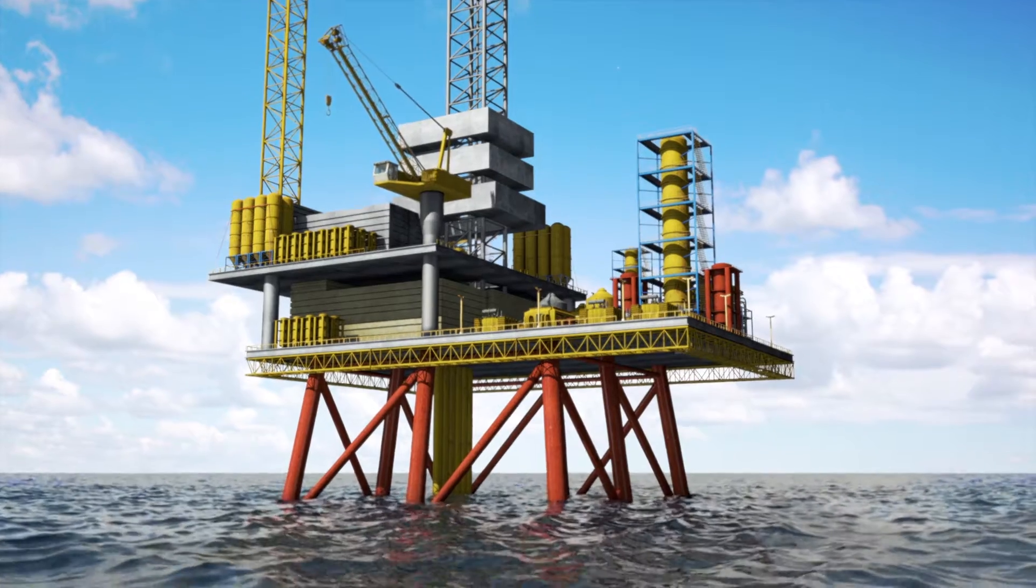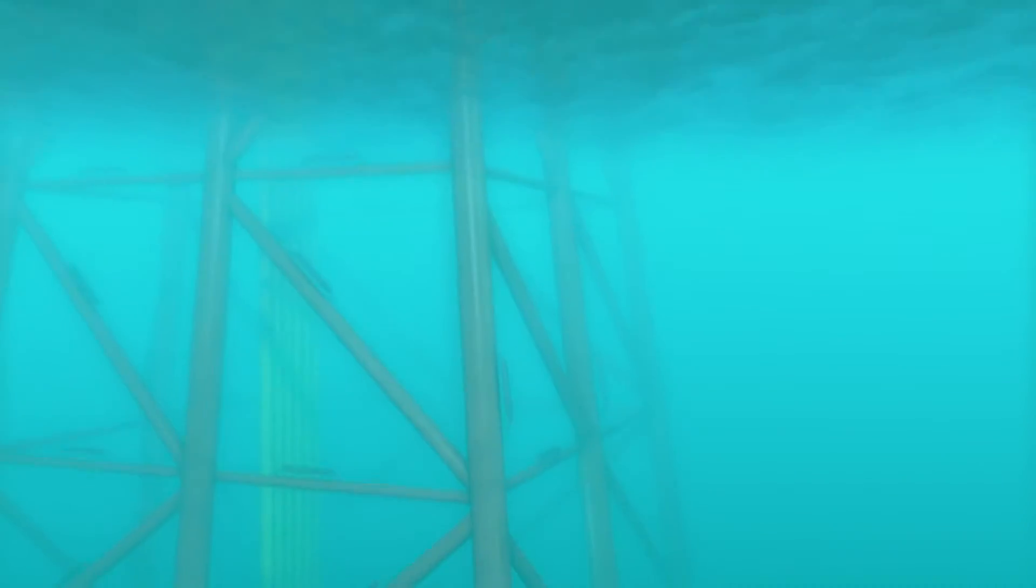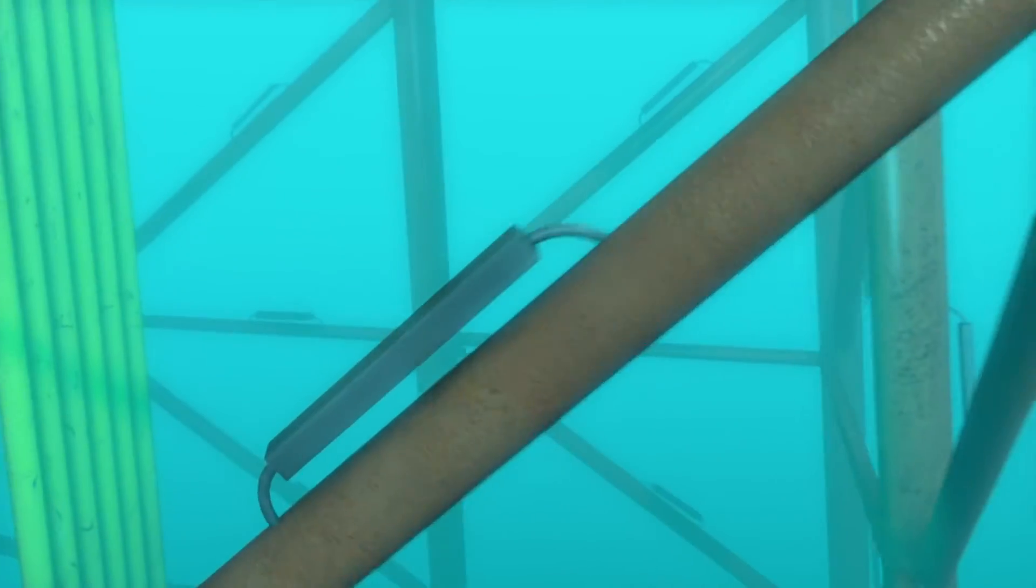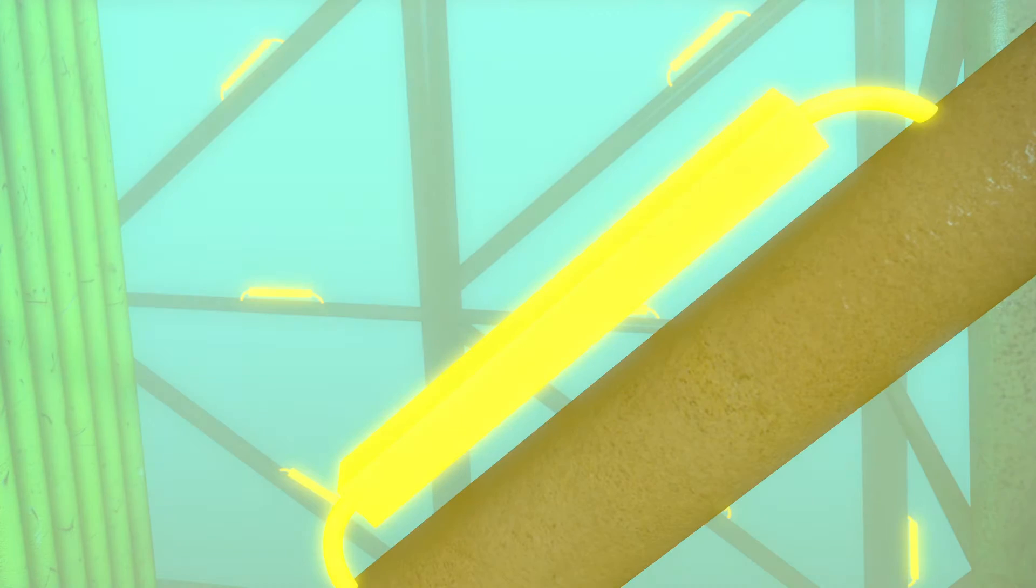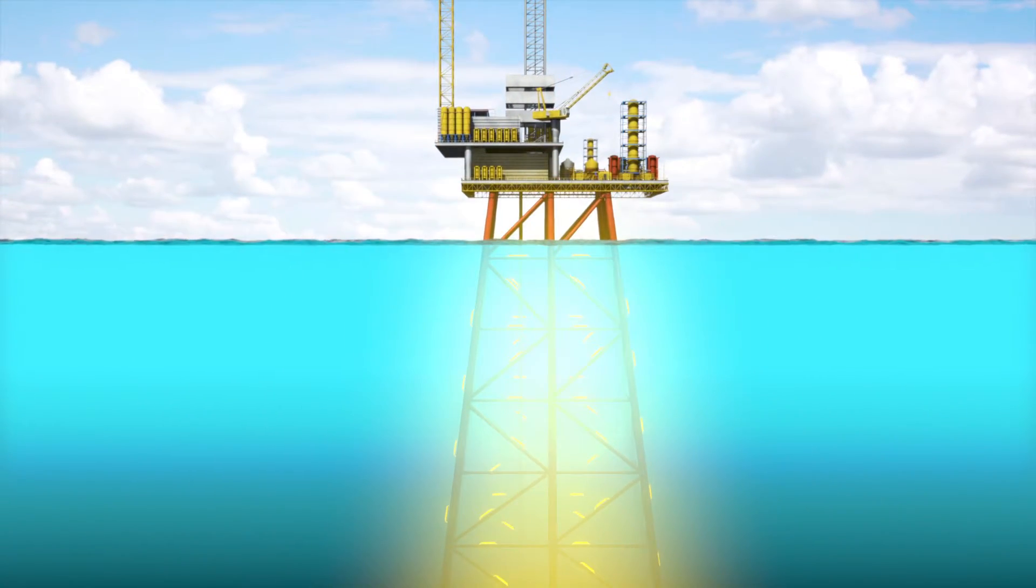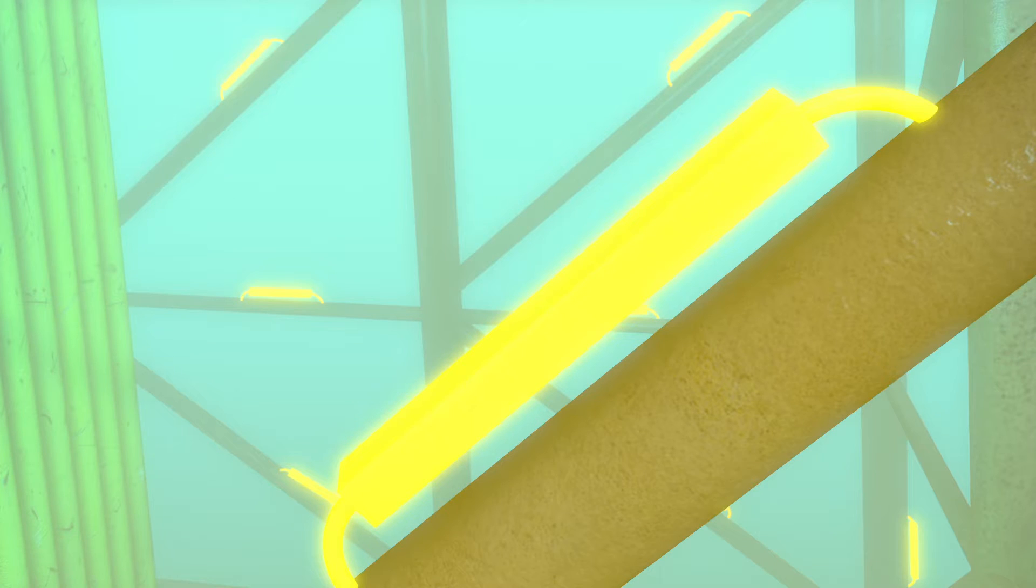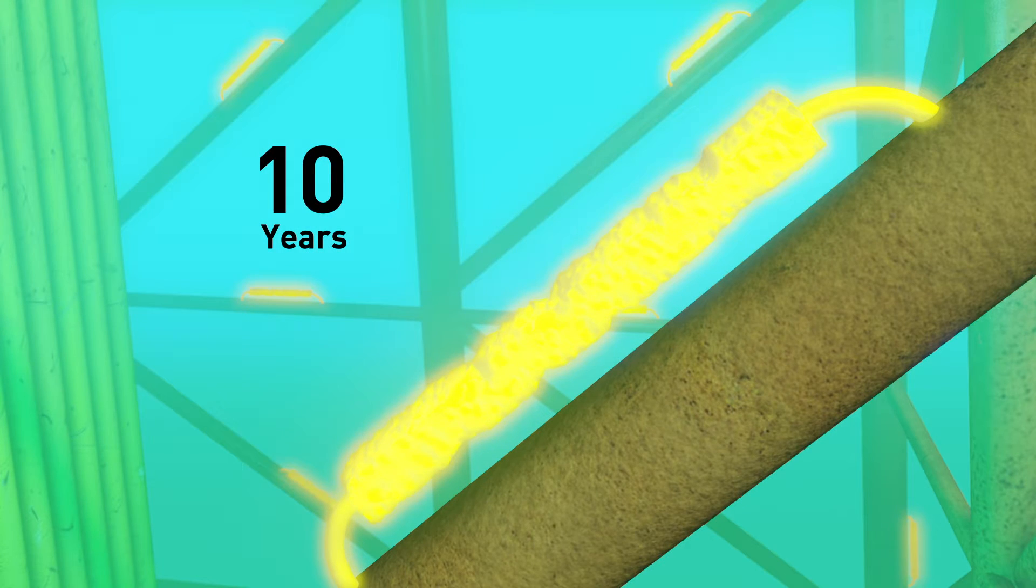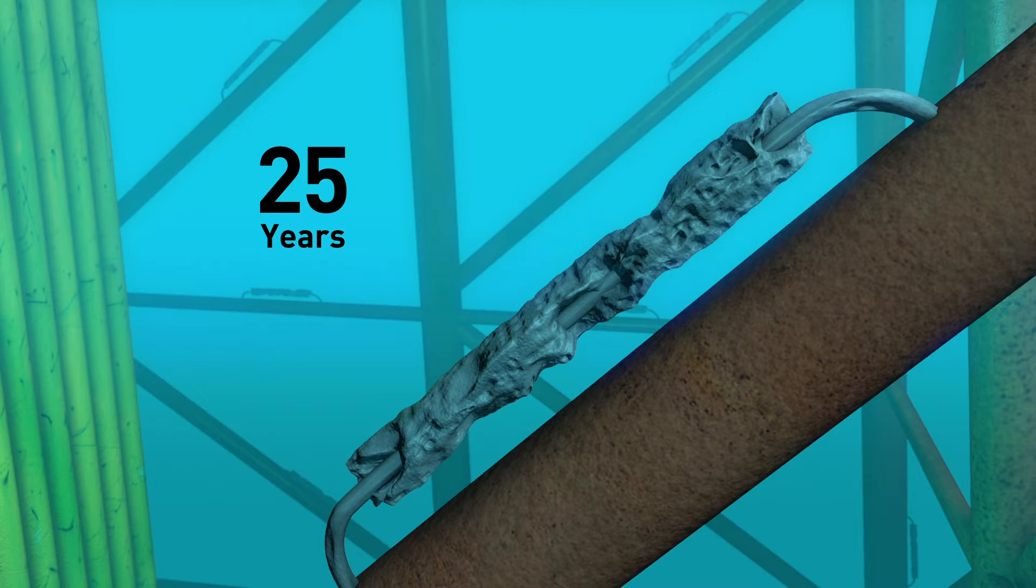Offshore structures are normally protected against corrosion by large aluminum anodes added during construction. On a typical platform in 150 feet of seawater there may be 100 anodes attached to protect it for 25 or 30 years. As the anodes age they eventually become depleted and no longer protect the steel structure.